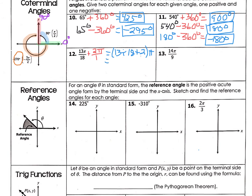Then you're going to hit math, enter, enter, and it's going to give you a beautiful fraction — 49 over 18. You're going to add the π back in. So that is adding a full revolution of radians to get a positive value.